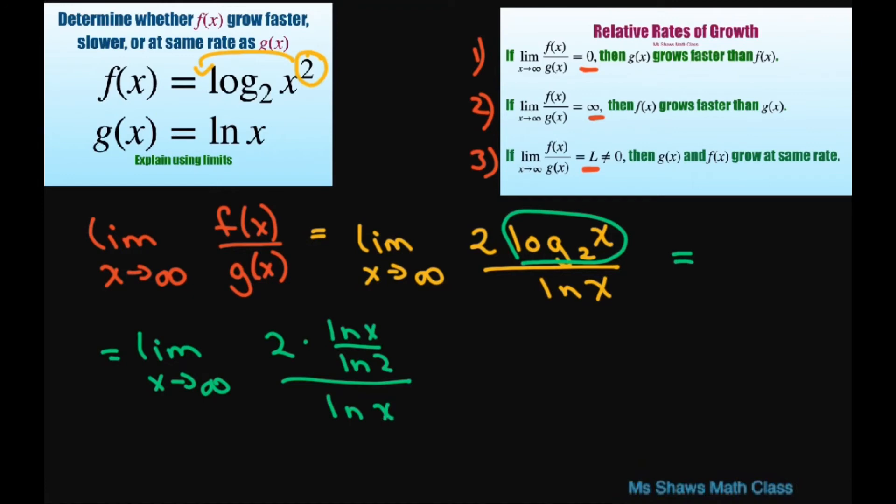So basically I can just move this up here. This is going to give us the limit as x approaches infinity of 2 times ln of x. This will be like 2 divided by 1 here, and then we're going to have ln of x times ln of 2.